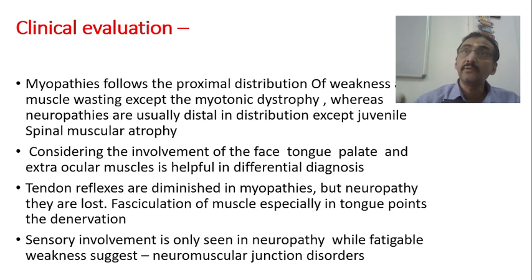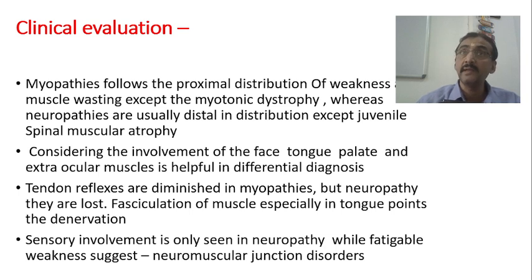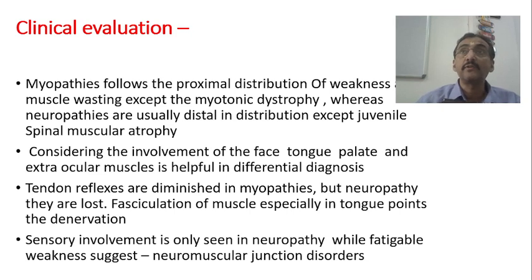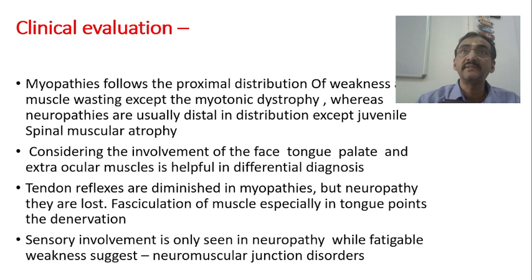Similarly, in neuropathies the distribution is distal most commonly. But distal distribution may not always be there — proximal distribution may be present in the case of spinal muscular atrophy. So these two are the variations and exceptions that we should keep in mind.